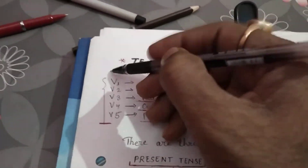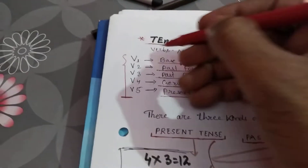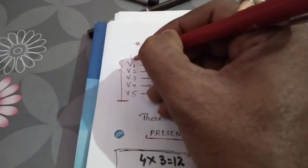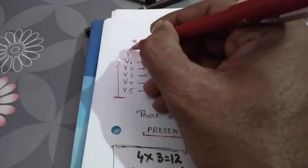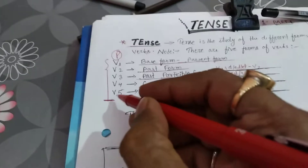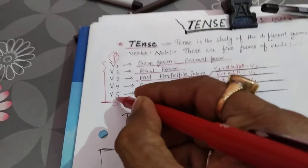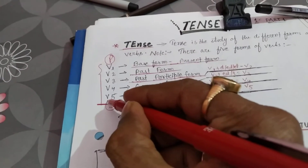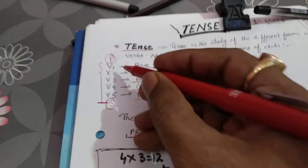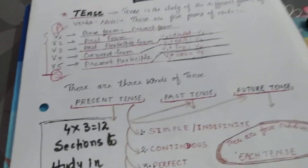One very important thing: V1 is the plural form of the verb, and V5 is the singular form of the verb. V1 is always plural and V5 is always singular. Now we are coming to the main topic about tense.